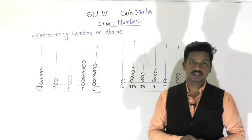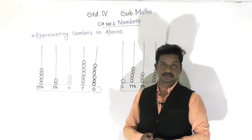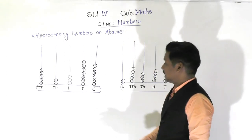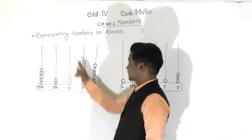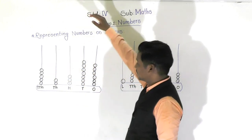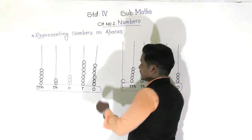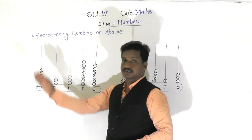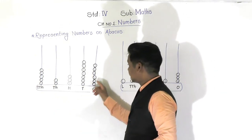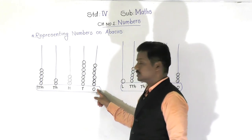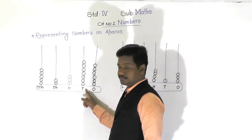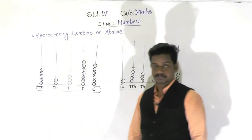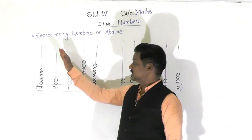An abacus is a simple tool to represent numbers. If you see here, this is the abacus figure. There are spikes pointed in an upward direction, and those spikes are used to represent numbers. Each spike represents a place value. From the right side, the first spike represents the ones place, the next represents the tens place, this spike represents the hundreds place, then thousands, and ten thousands.